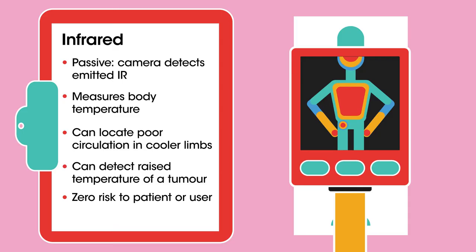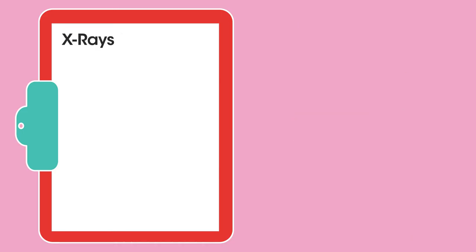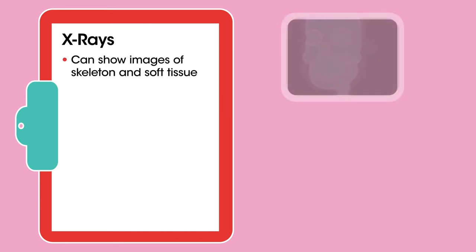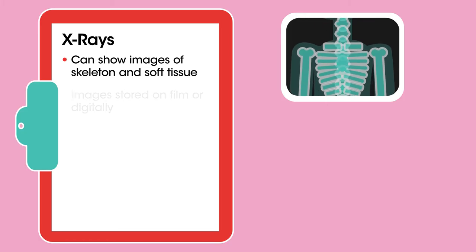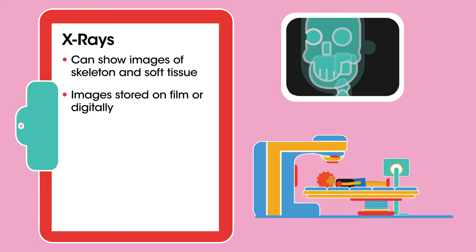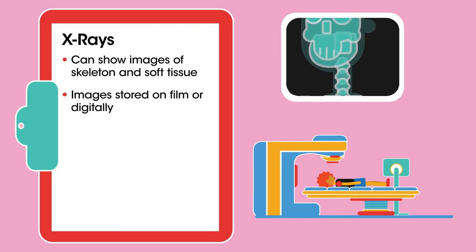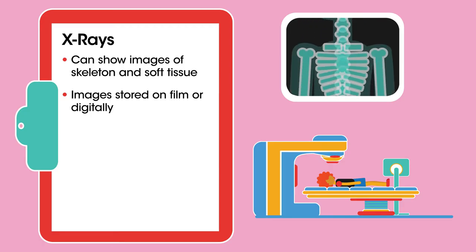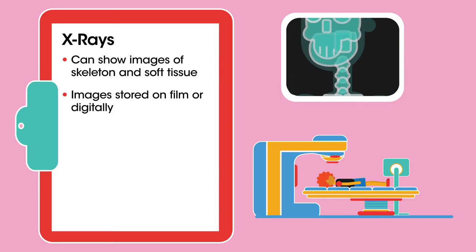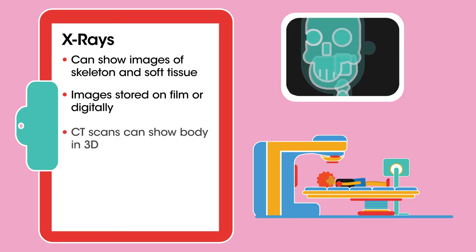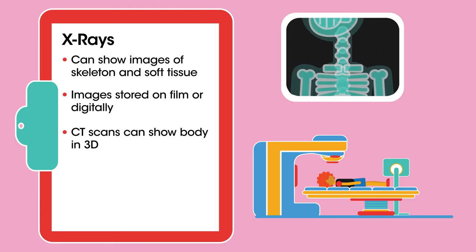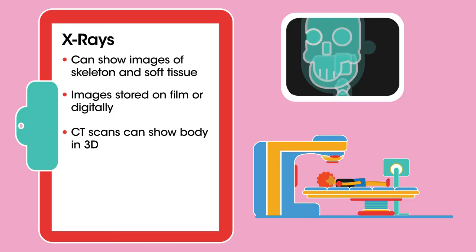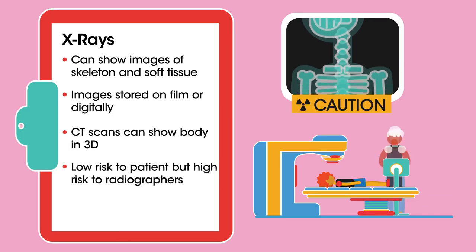There is zero risk unless you drop the camera on your foot. X-rays — these are good at penetrating the body. Skeletal structures absorb most x-rays and softer tissue much less. Images are captured by exposing photographic film or as a digital image via charge-coupled devices, or CCD detectors — much used in computerized tomography, or CT scans, which gives very high quality 3D images.